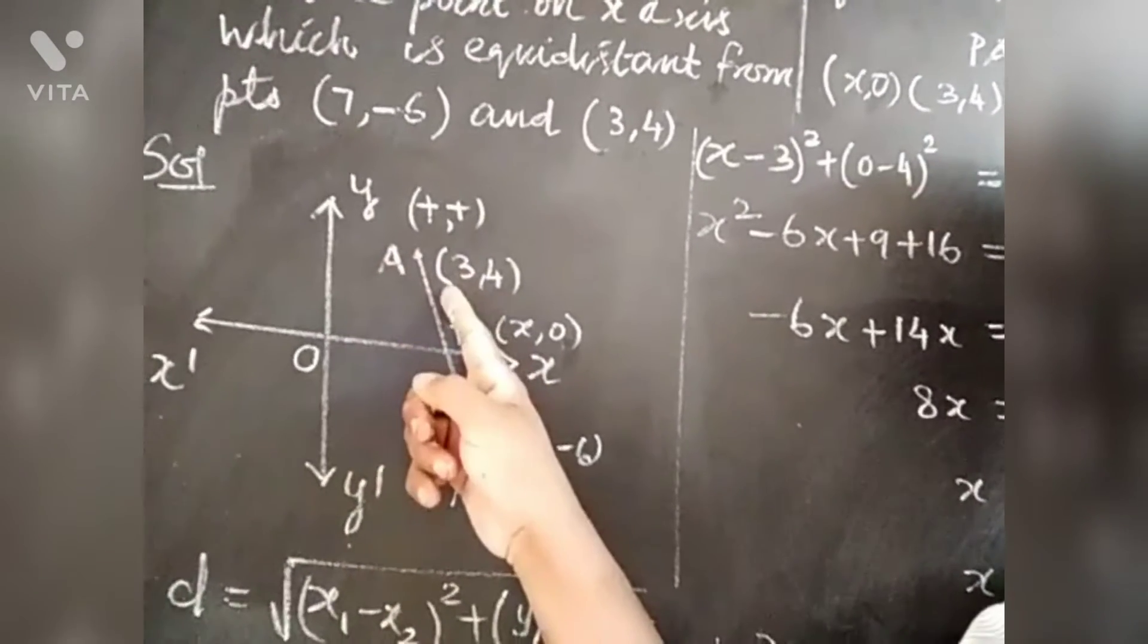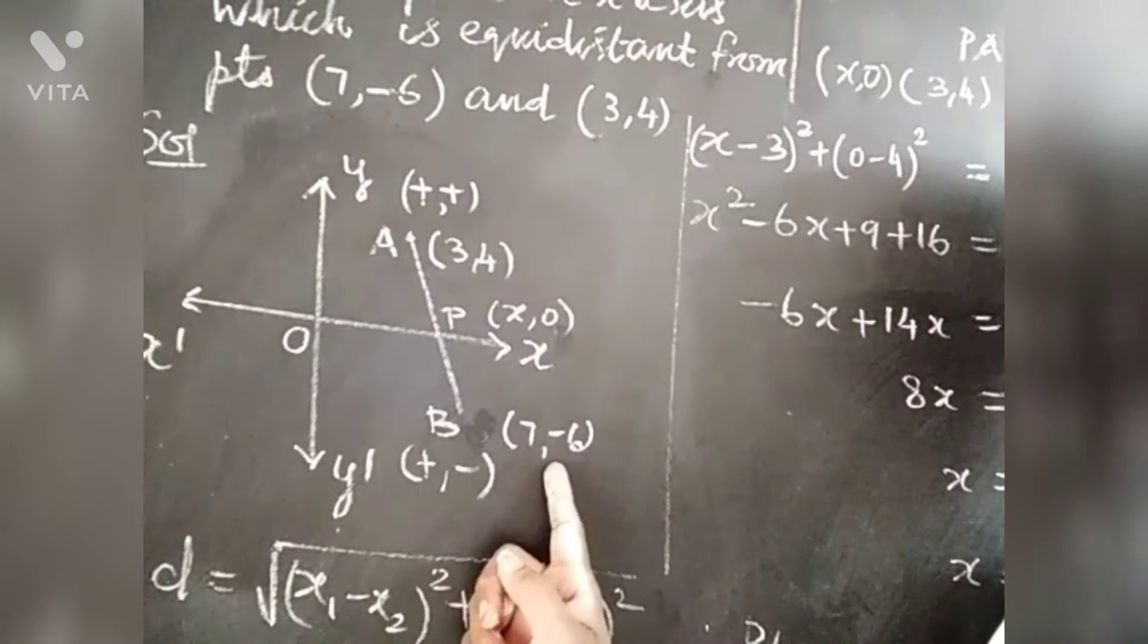Here we have a point A (3, 4). Here we have a point B (7, -6).